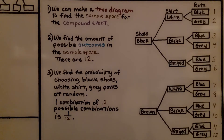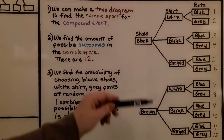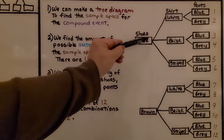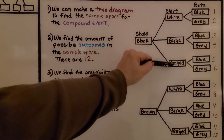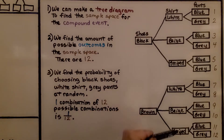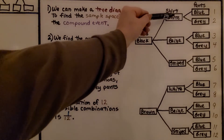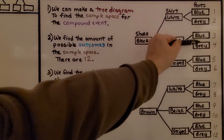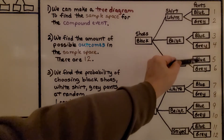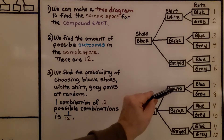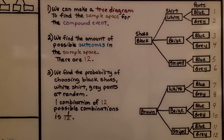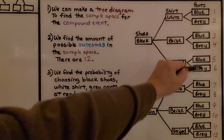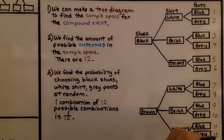We can make a tree diagram to find the sample space for the compound event. He has a black pair and a brown pair of shoes. We draw our tree diagram to extend to the three different shirts — white, beige, and striped — for the black shoes. From the white shirt, we branch to blue and gray pants. The beige shirt shows blue and gray pants, and the striped shirt shows blue and gray pants. We do the same for the brown shoes. We count all possible outcomes in the sample space: there are 12.